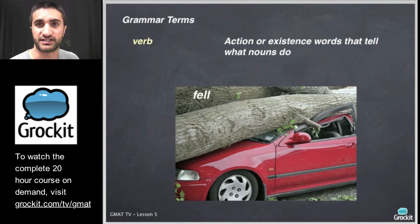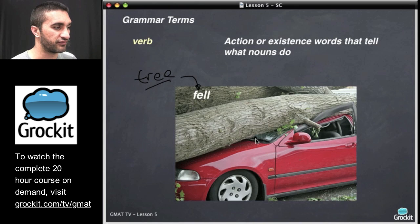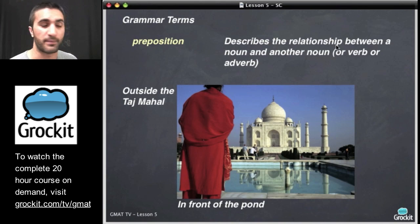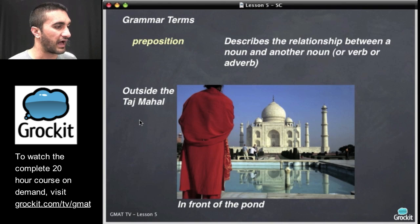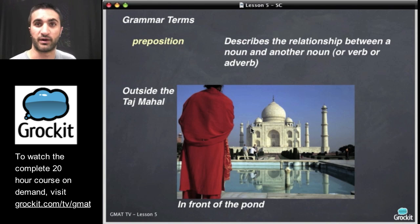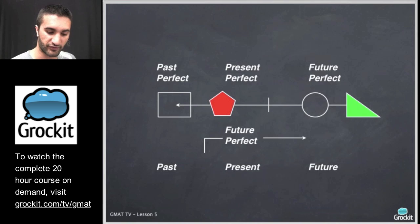Verbs are action or existence words that tell us what nouns do. For example: the tree fell on the car — the noun is the tree, fell is the verb, and on is a preposition. Prepositions describe the relationship between a noun and another noun, verb, or adverb. For instance: outside the Taj Mahal, in front of the pond — this person is outside the Taj Mahal and in front of the pond.